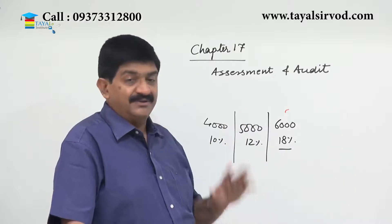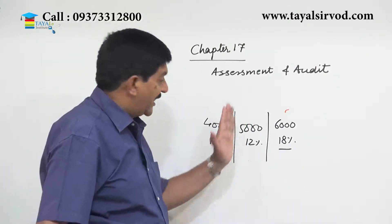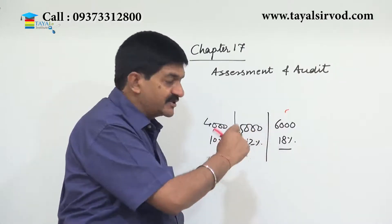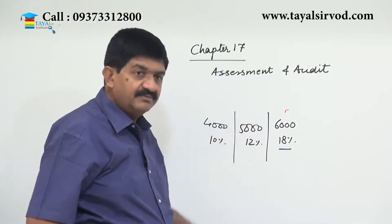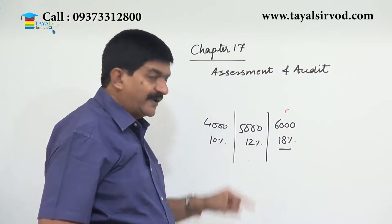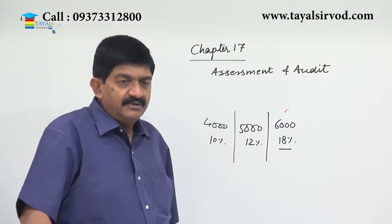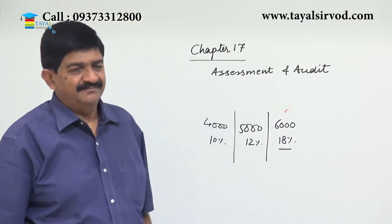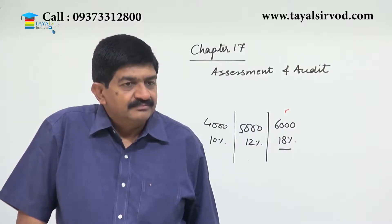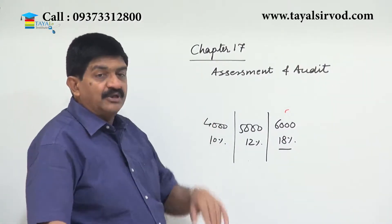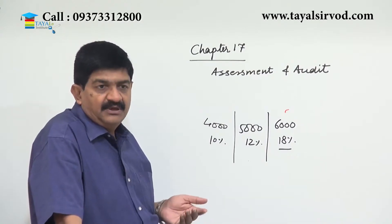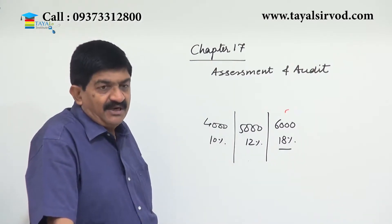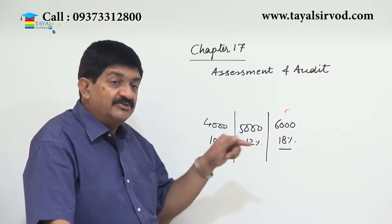In another situation, the final liability turns out to be less than what was paid provisionally. Suppose the supplier paid tax provisionally on a value of rupees 6,000 at 12 percent, but the final liability is lower — meaning excess payment has already been made. That excess amount is refundable. But refundable to whom? That depends on whether the supplier has already passed on the tax burden to the customer. If the burden has not been passed on, the supplier is eligible for the refund; if the burden has been passed on, only the customer is eligible for the refund.